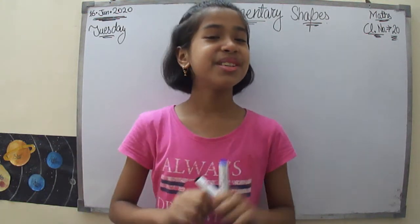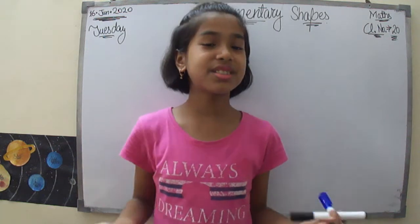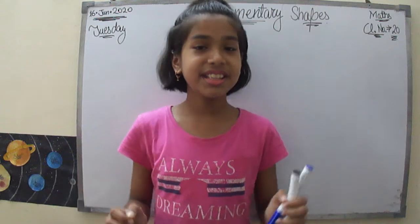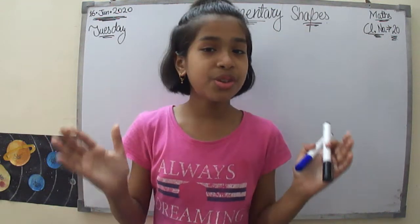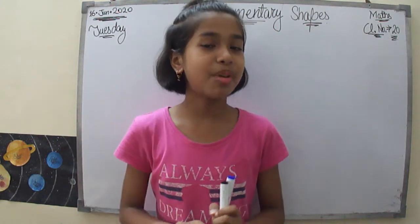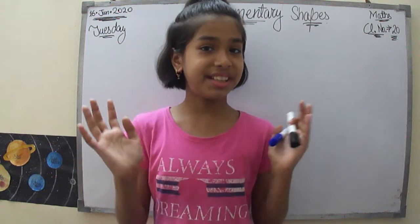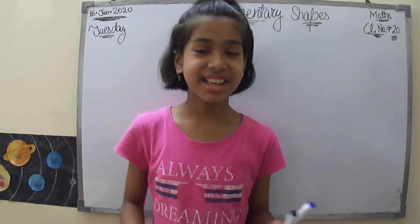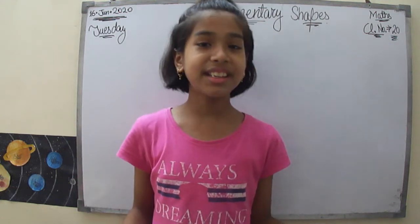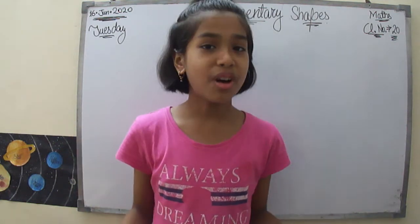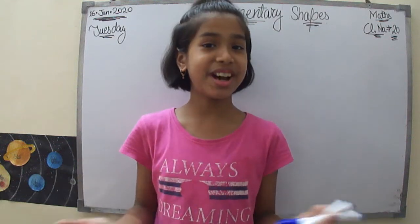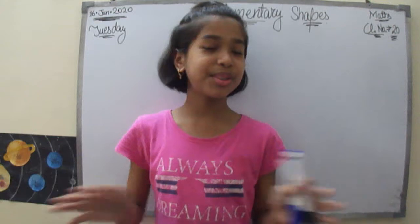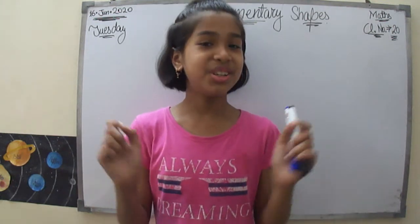Let's start. Firstly, let's discuss what is a quadrilateral. The quadrilateral is a closed figure made up of four straight lines. What will be the examples? The square, rectangle, trapezium, rhombus, parallelogram. Yes, we are going to talk about all of these today.